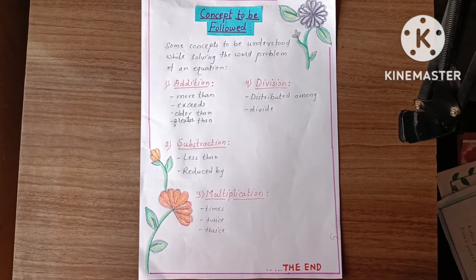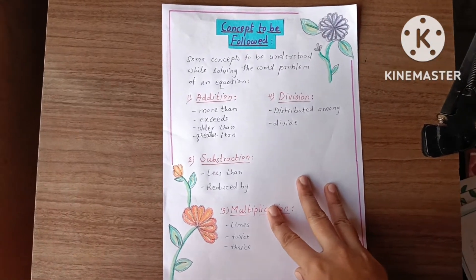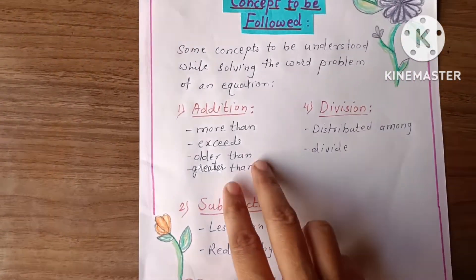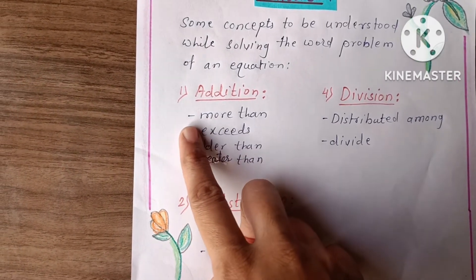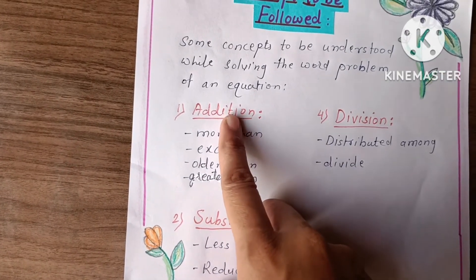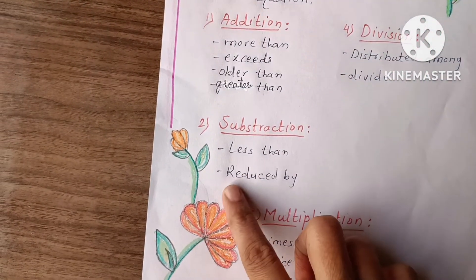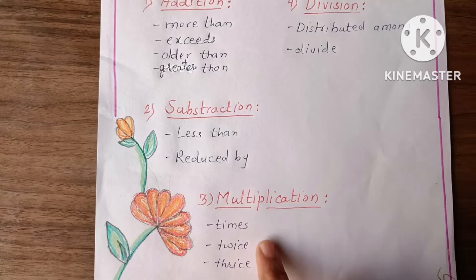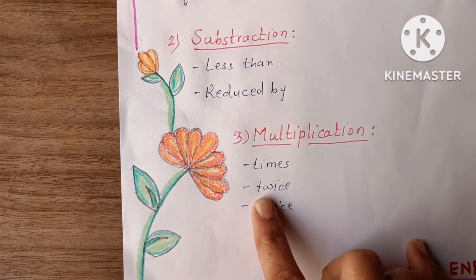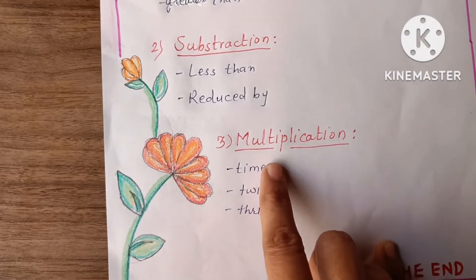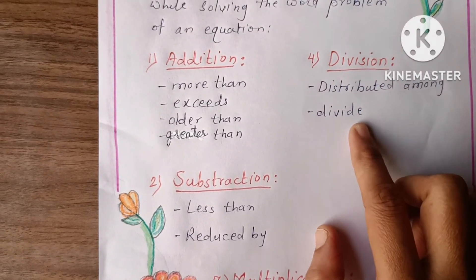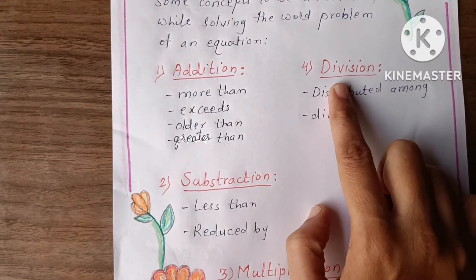Here is the next page. While solving the equation we have to consider some things and follow some concepts. In a word problem, if words like 'more than', 'exceeds', 'older than', or 'greater than' come, it means we have to do addition. If words like 'less than' or 'reduced by' come, it means subtraction. Words like 'times', 'twice', 'thrice' mean multiplication, and words like 'distributed among' or 'divided by' mean division.